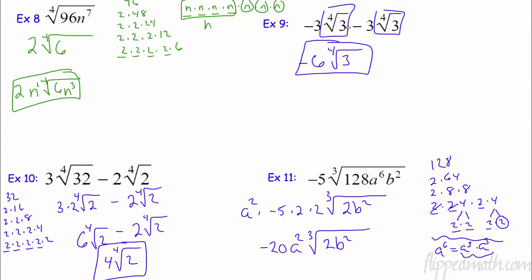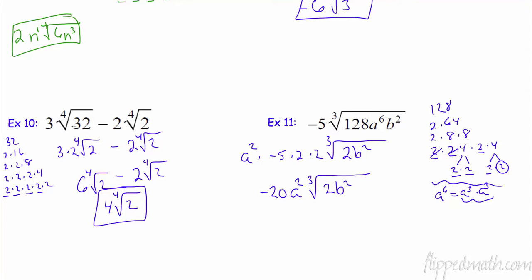For the first one, combine like terms: negative 3 plus negative 3 is negative 6. Down here it's trickier. For the cube root of 32: 32 is 2 to the fifth, so I take one 2 out and one 2 stays in — 3 times 2 is 6, giving 4 times the cube root of 2 minus 2 times the cube root of 2, so the like terms give 4 minus 2 is 4 times the cube root of 2. For 128: I took out two groups of three twos, leaving one 2 inside. For a to the sixth: a to the sixth is a cubed times a cubed, so I take out two a's — that's a squared.